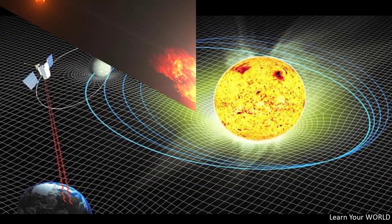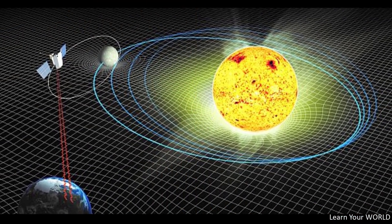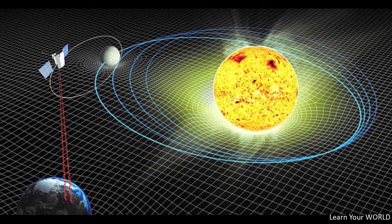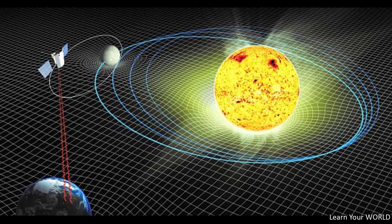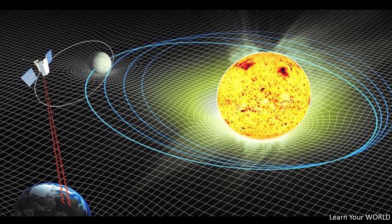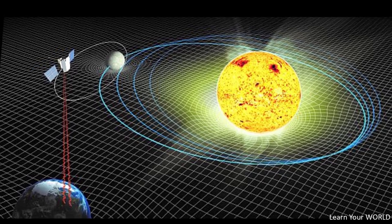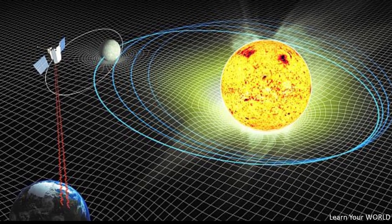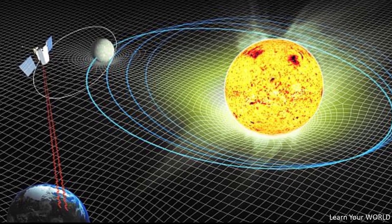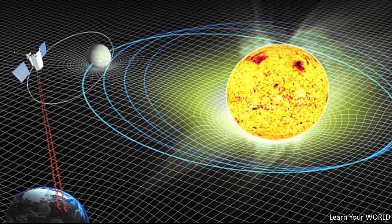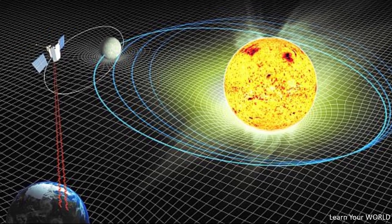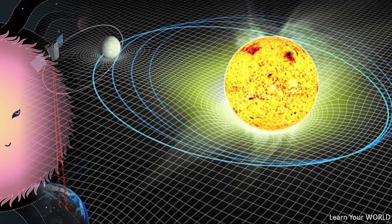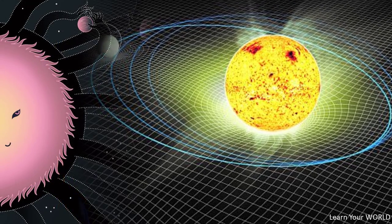The moon revolves around the Earth, as the Earth has its own twisting power. Similarly, the moon also bends the fabric of space-time; however, this amount of twist is much less than that of the Earth and that of the sun. This amount of bending varies depending on the mass of the objects.